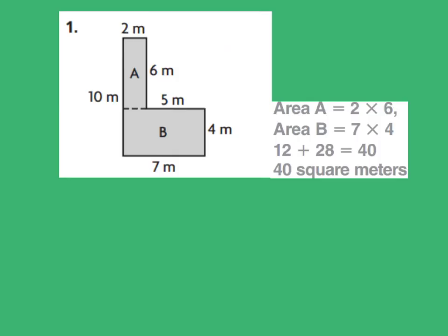So we learned yesterday in our video that the formula for area is base times height. For rectangle A, you can see that we have a base of 2 meters and a height of 6 meters. We made an imaginary line to cut here to separate our two separate rectangles. So we know 2 times 6 meters equals 12 squared meters.